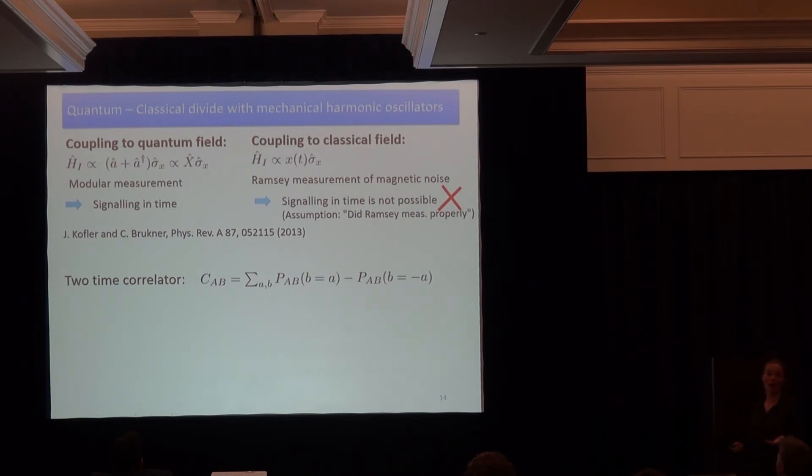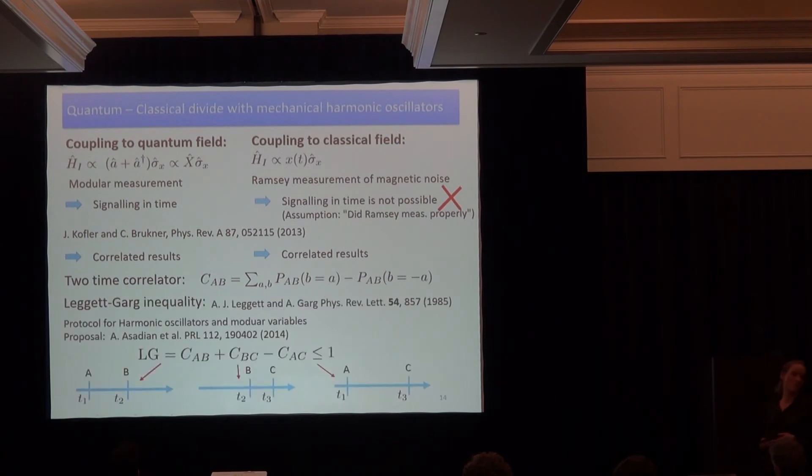There is another well known way of relating such sequential measurements. We cannot only look whether they signal, but we can look how they are correlated. So we just add up whether the results are the same and subtract when the results are different. We know in classical physics or classical Ramsey measurements, they can be correlated. We can even get more information about our noise. But also quantum mechanically, a sequential measurement can be correlated. So if we want to distinguish this regime from this regime with correlators, we need to do a bit more work. We need to look at a sequence of three measurements, which is covered in the so-called Leggett-Garg inequality. So we need to look at the sequence of three measurements in time and measure always the correlator between each pair. Then the quantum oscillator is able to violate this inequality, but the classical noise field would not be able.